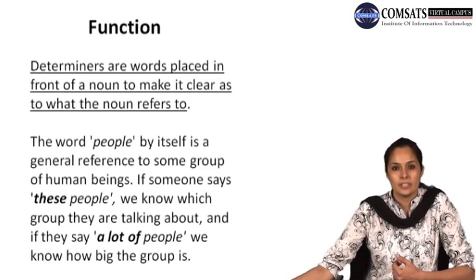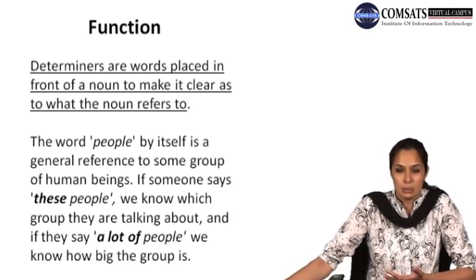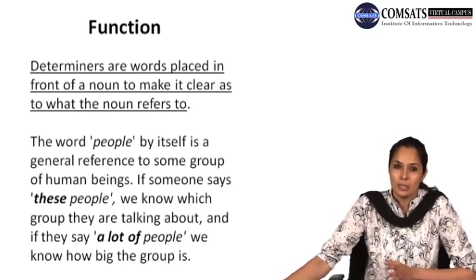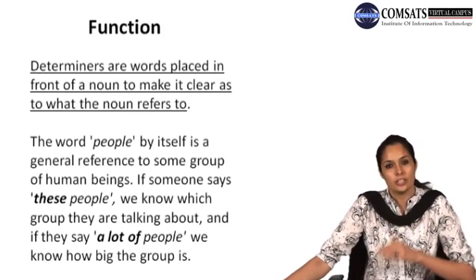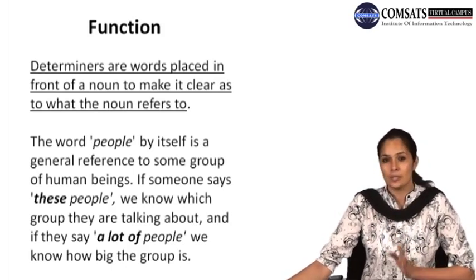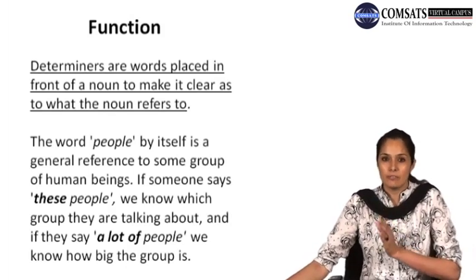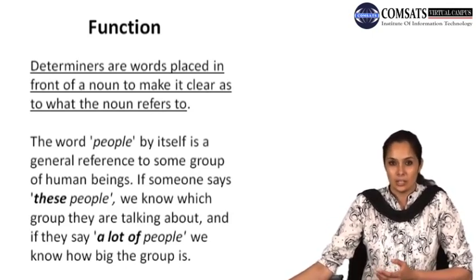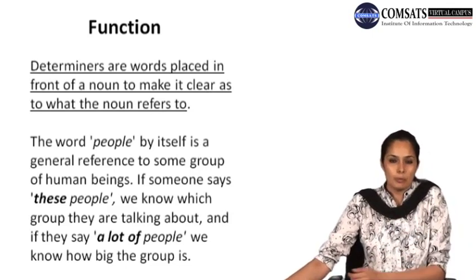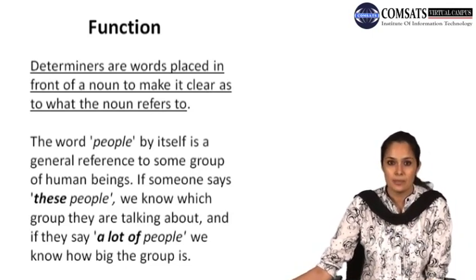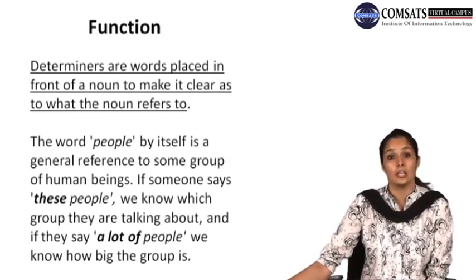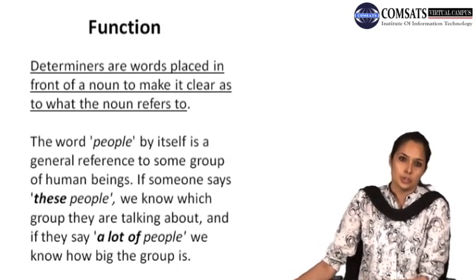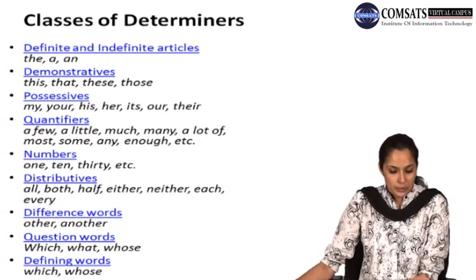Generally when we say 'table', it's just a table. When we say 'this table', we are referring to which table we are talking about. And if we say 'a wooden table', then the kind of table is involved — these are specified. So determiners are words that determine the specific meaning of a word. 'People' in itself may not mean any important thing — it will generally be a group of people. But when we say 'these people', we know which people we are talking about, and 'a lot of people' tells us how big the group is.